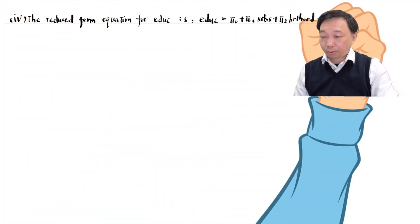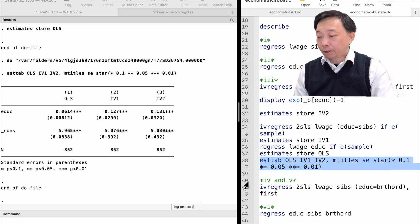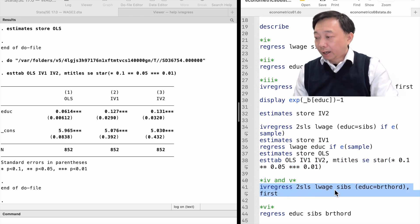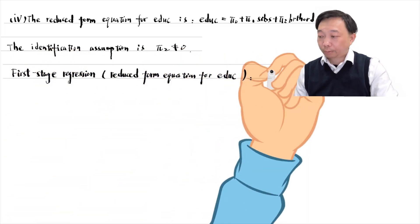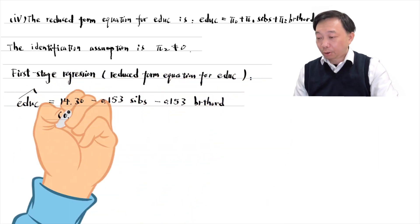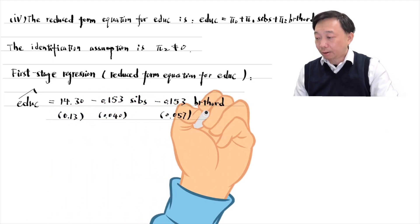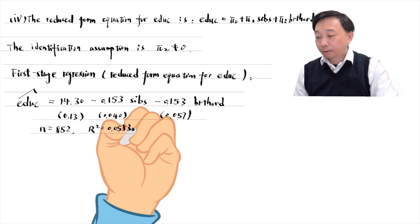The identification assumption is that pi 2 is not equal to 0. We estimate the model by two-stage least squares with birth order as an excluded instrumental variable for education. We report the first-stage regression, or the reduced form equation for education. We find that the estimate for pi 2 is minus 0.15, implying that the second child receives 0.15 fewer years of schooling than the first child. It is statistically significant at the 1% level. The instrument relevance requirement is satisfied.